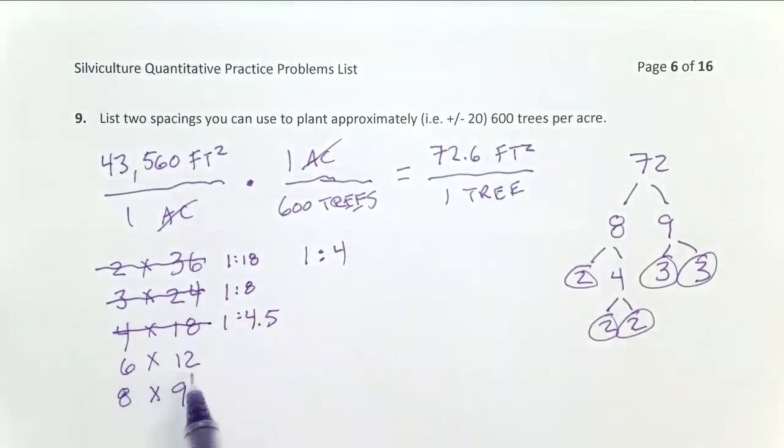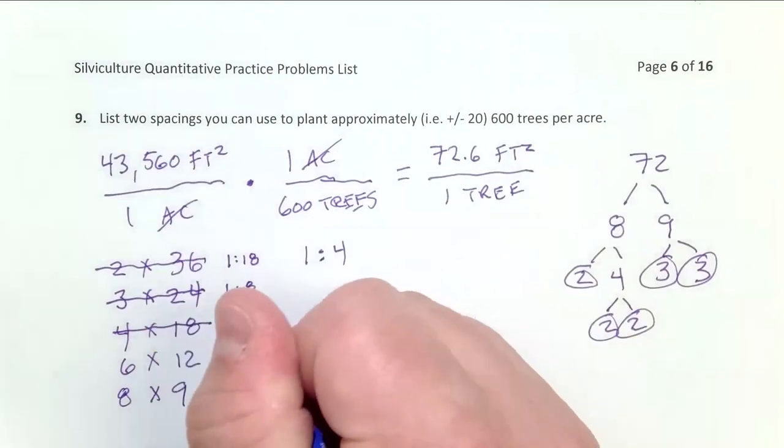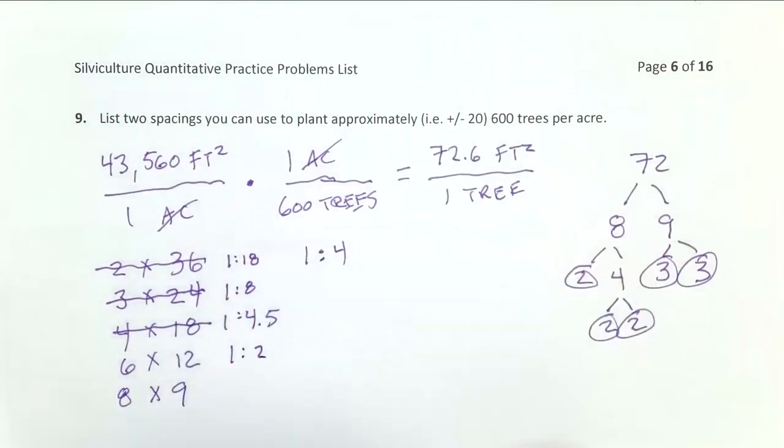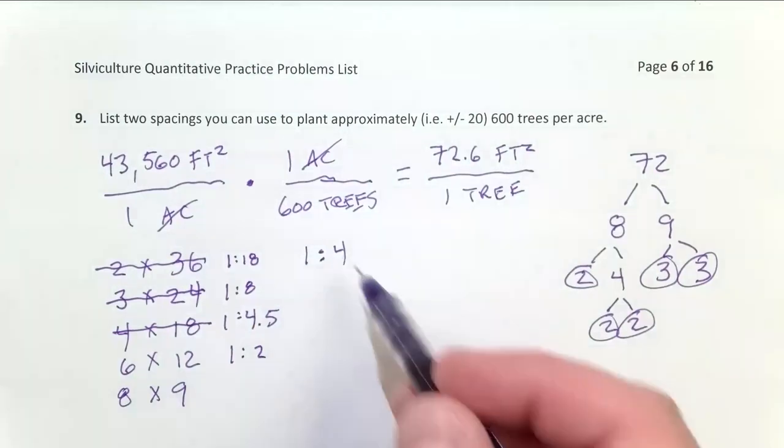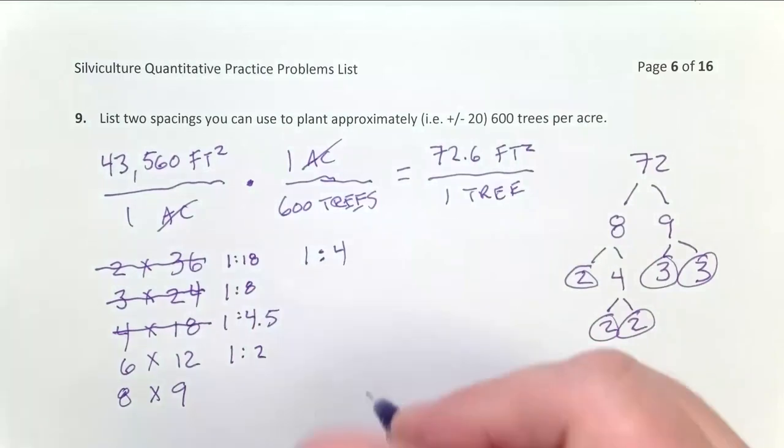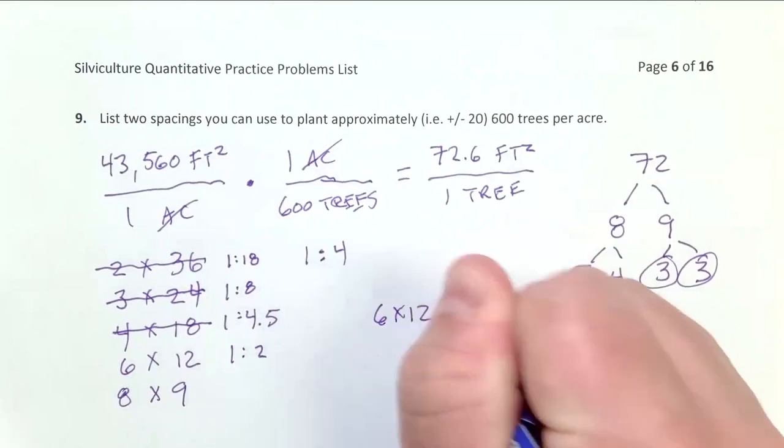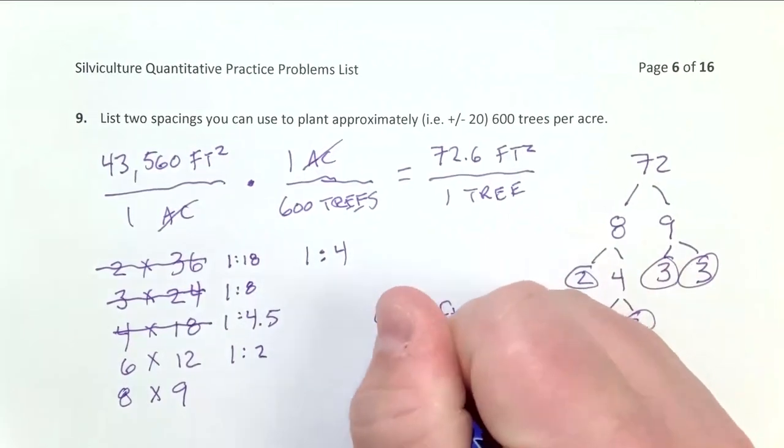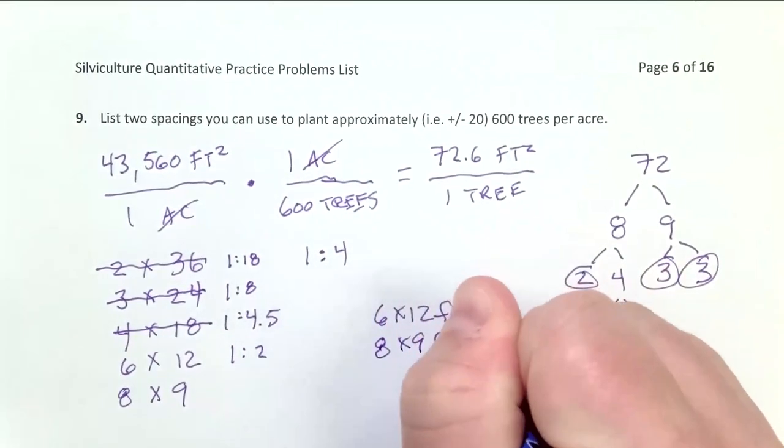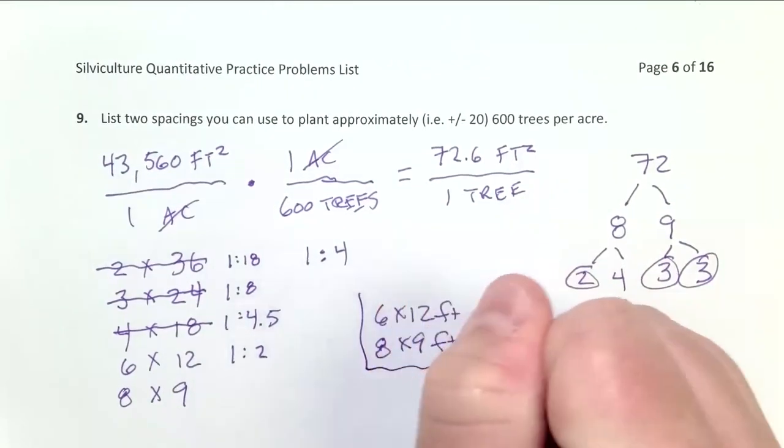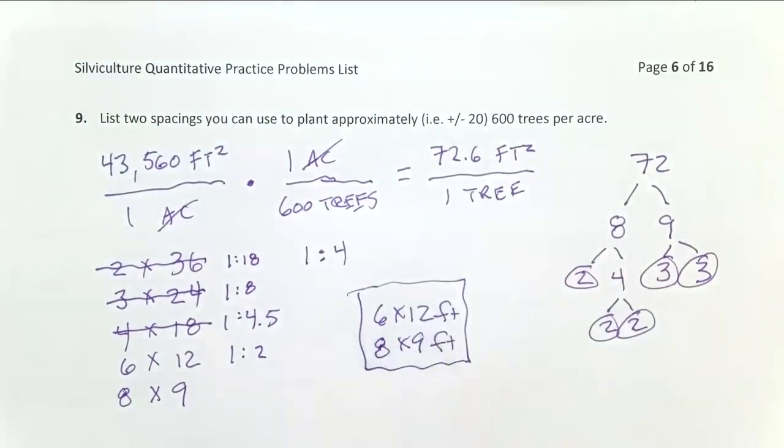But now if I look at 6 by 12, that's going to be 1 to 2. That definitely works. And then 8 by 9, you can see those are almost the same numbers. That's almost a 1 to 1 ratio. So that definitely works. It's well below our 1 to 4. So my two correct spacings I've arrived at here are 6 by 12 feet and 8 by 9 feet. If this problem only asks for one correct spacing, either of those would be a correct answer. They're equally correct.